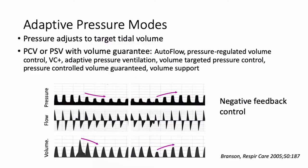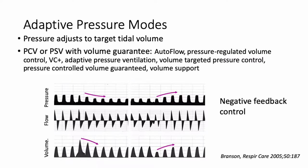Let's spend a minute talking about adaptive pressure modes — adaptive pressure control and adaptive pressure support. For these modes, the pressure applied by the ventilator is adjusted to maintain a target tidal volume. We, the clinician, dial into the ventilator the desired tidal volume, such as 400 milliliters, and the ventilator then adjusts the level of pressure control or pressure support up and down to maintain that target. This goes by a variety of different names on different ventilators, which is a source of confusion in mechanical ventilation.